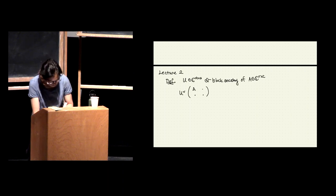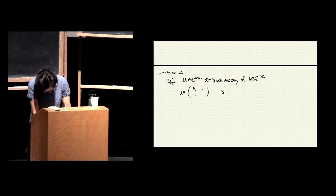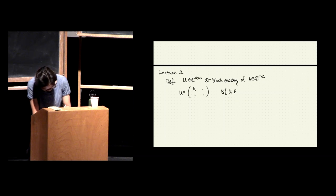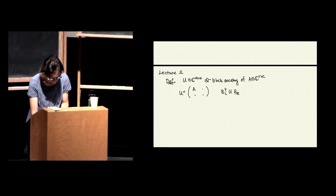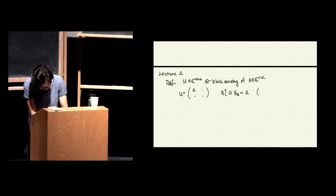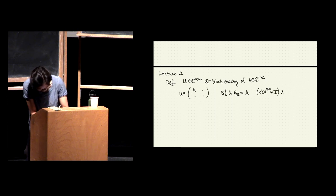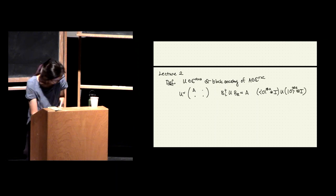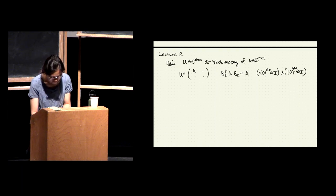One way I wrote this was by defining a selection operator that goes into the top left corner, equal to A. Alternatively, if the dimensions match up, you can write it in terms of selecting the qubits. Here Q is the gate complexity of U.